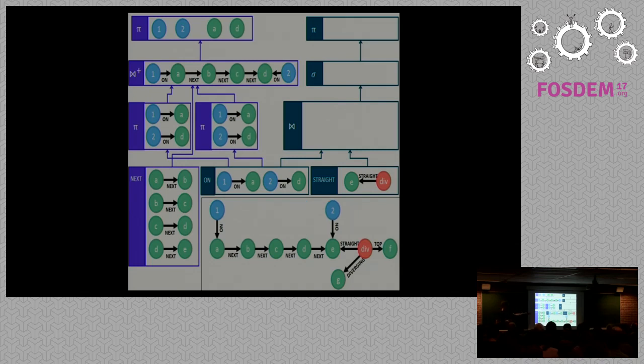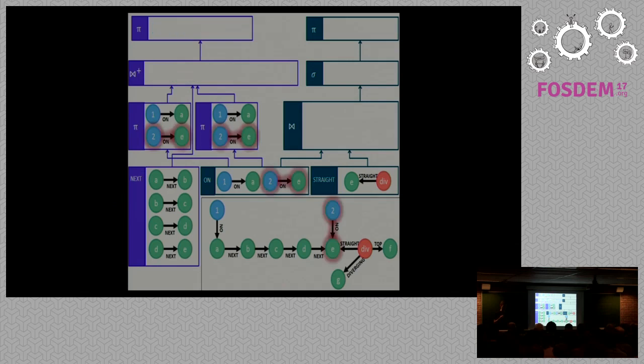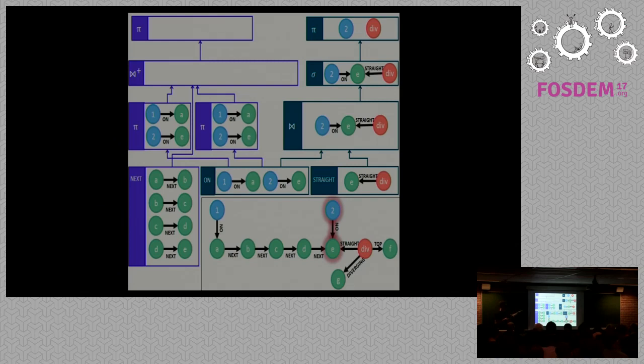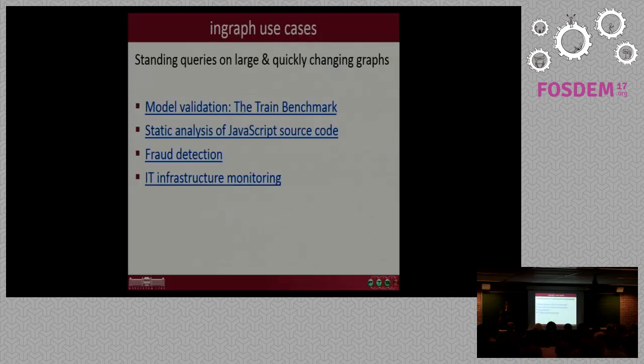So some time passes and our train moves from segment D to segment E. And this shows the advantage of the RETE network because now we only have to propagate the changes to the indexer. We change the 2D tuple to 2E, and then we have no results on the dangerous proximity results. But we will have some results in trailing the switch because this train is about to hit the switch that's set to a divergent position. And obviously, as I said, this is a maneuver that's illegal in railway systems.